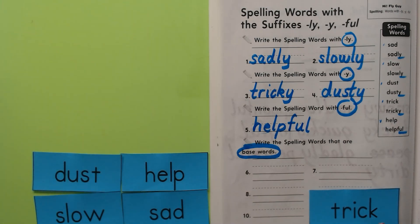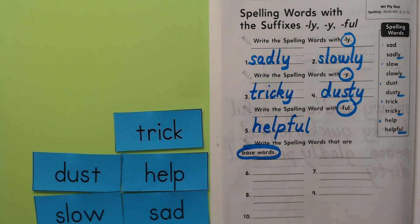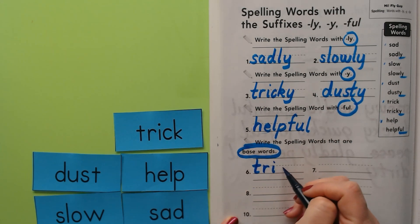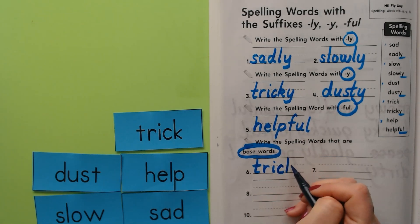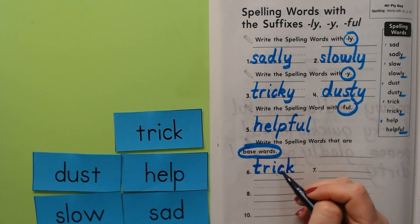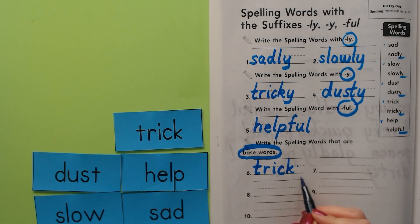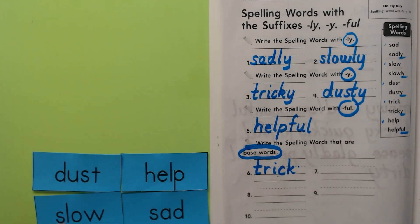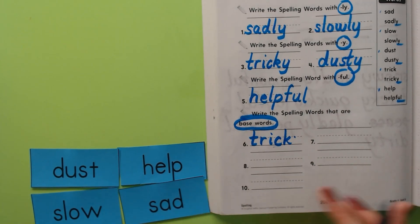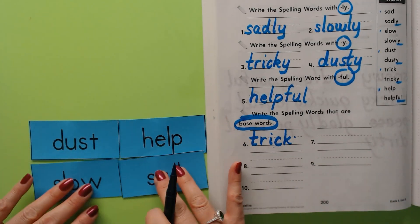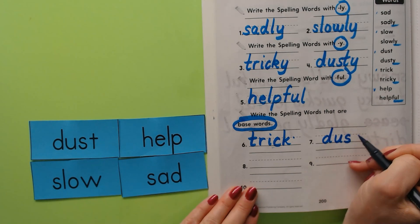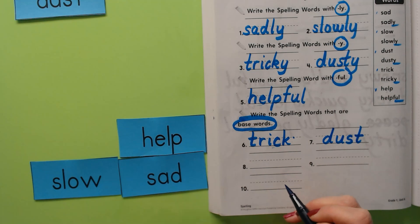Now we just have to write our base words. Trick first — remember, which two letters make the K sound in trick? C and K. So in trick we use CK to spell the K sound. Then dust — it doesn't matter where you write these, they just want us to write all of the base words. Help.